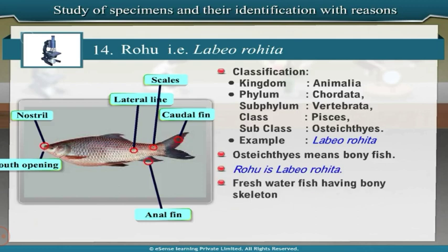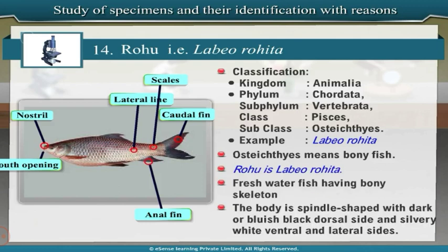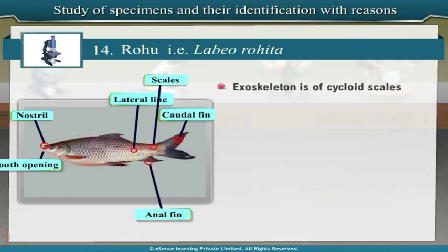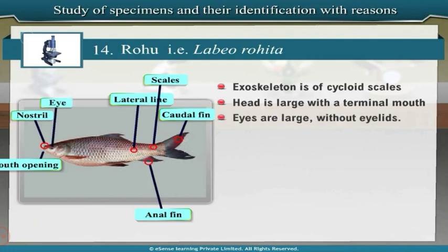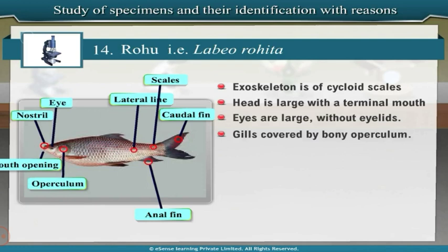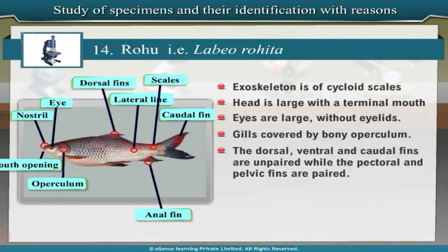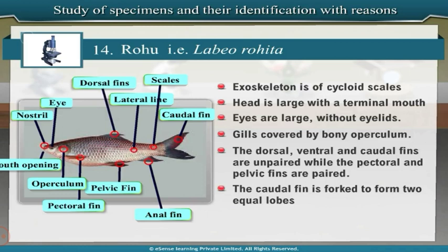Rohu is a freshwater fish having a bony skeleton. The body is spindle shaped with dark or bluish black dorsal side and silvery white ventral and lateral sides. Exoskeleton is of cycloid scales. The head is large with a terminal mouth. Eyes are large without eyelids. Gills are covered by bony operculum. The dorsal, ventral and caudal fins are unpaired while the pectoral and pelvic fins are paired. The caudal fin is forked to form two equal lobes, so the tail is called homocercal tail.